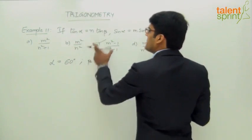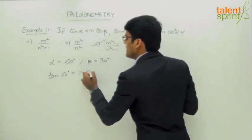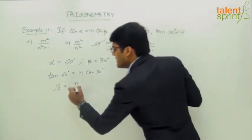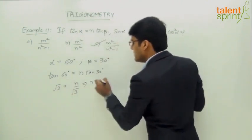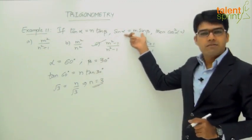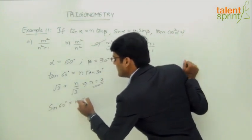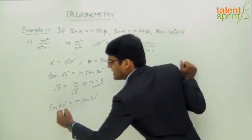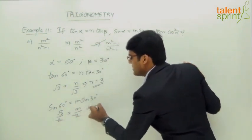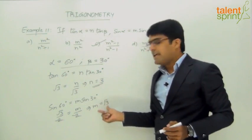Substituting into the first equation: tan 60° = n × tan 30°, so √3 = n × (1/√3), which gives n = √3 × √3 = 3. Substituting into the second equation: sin 60° = m × sin 30°, so √3/2 = m × (1/2). The 2s cancel, giving m = √3. So by assuming α = 60° and β = 30°, we get n = 3 and m = √3.